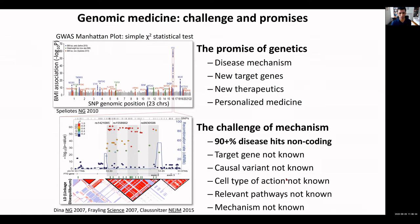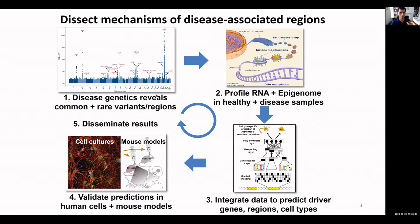The cell type of action is not known — these regions could be active in many different locations. How do you systematically find the true target genes? The relevant pathways and mechanisms are not known. Our team and many others in the field have taken this approach for dissecting the mechanism underlying these genetic associations.